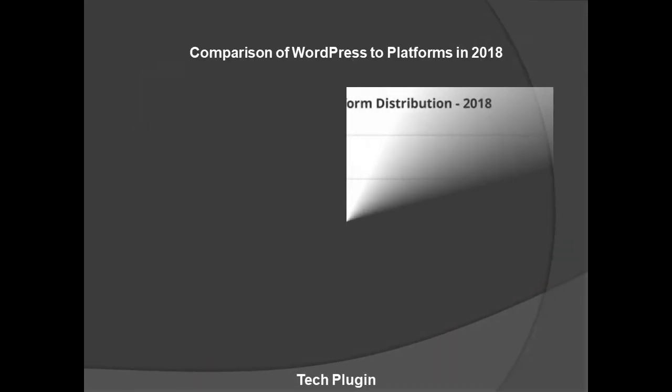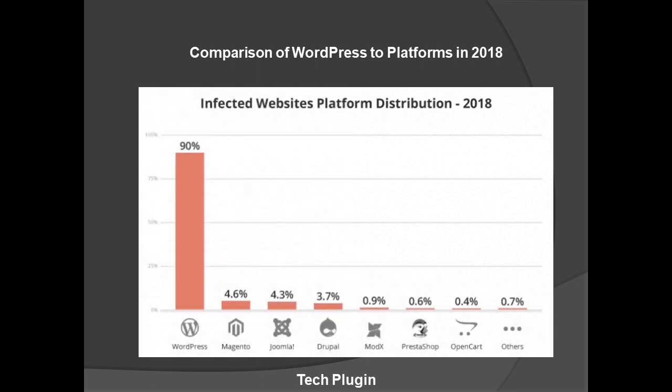Here in the 2018 comparison of CMS platforms — WordPress, Magento, Joomla, Drupal, Modx, PrestaShop, OpenCart, and others — you can see that WordPress is at 90 percent while all others are just at 4.6, 4.3, 3.7, and 0.9 percent respectively.